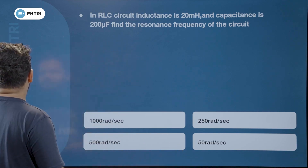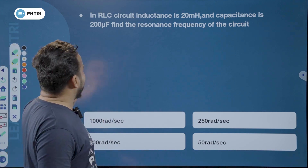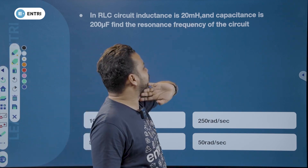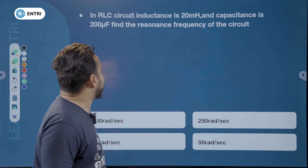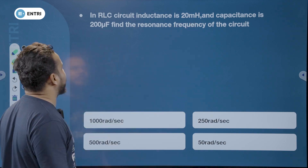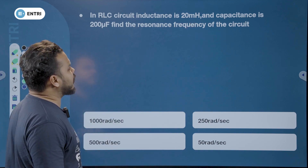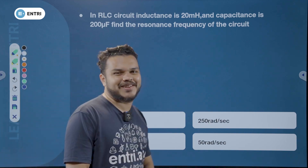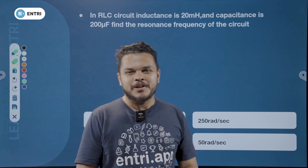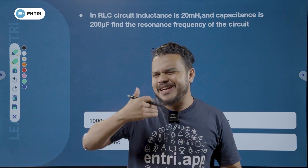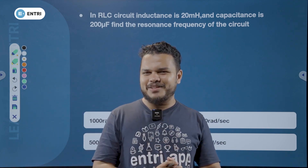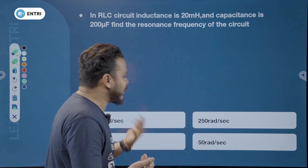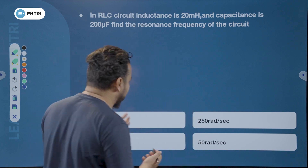First question: In an RLC circuit, inductance is 20 millihenry and capacitance is 200 microfarad. Find the resonance frequency of the circuit. We need to find the resonating frequency accurately.